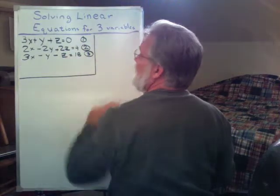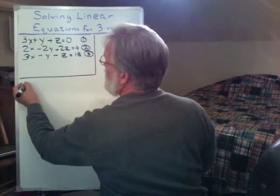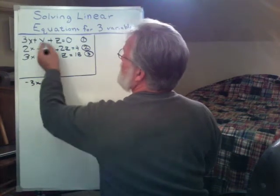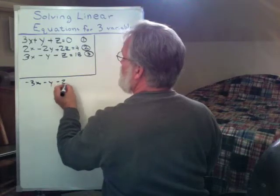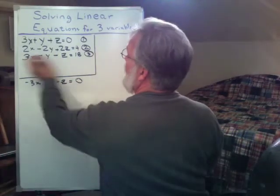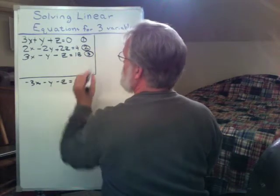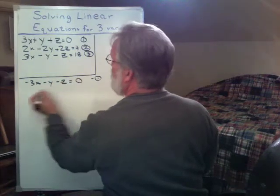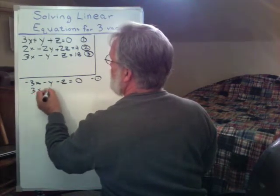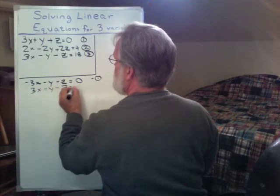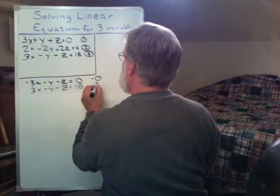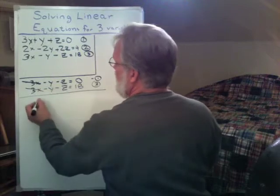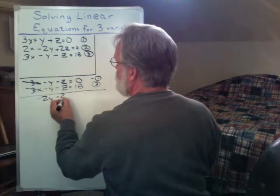Well, we're going to have to multiply through this by a negative one. So negative one times 3x is minus 3x. Negative one times y is minus y. Negative one times z is minus z. And negative one times zero will be zero. And then we're going to simply add equation number three. So this is the negative of equation one. So now we're going to use equation three. 3x minus y minus z equals 18. And that's equation three. So we're going to add these two together. Well, the 3x's eliminate. We have minus 2y minus 2z.